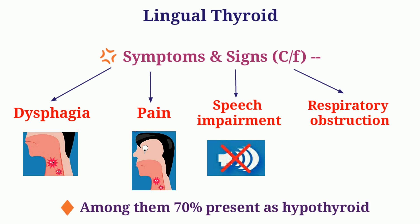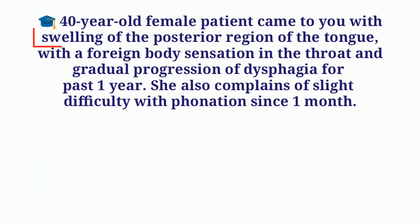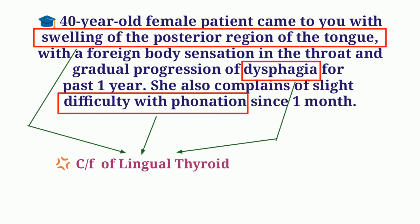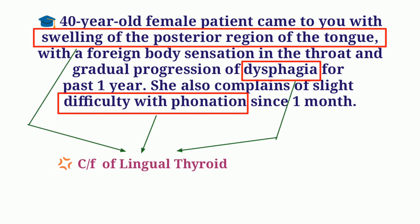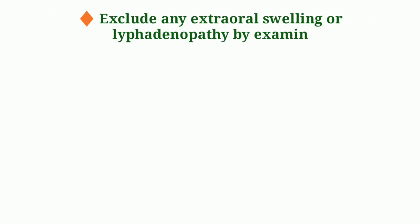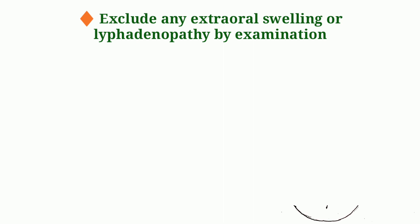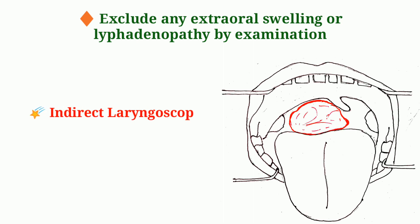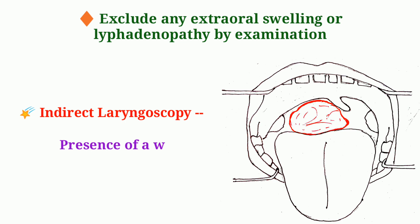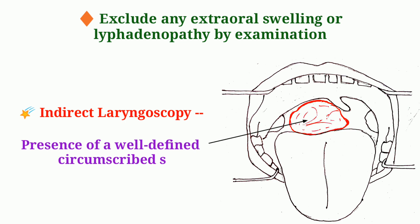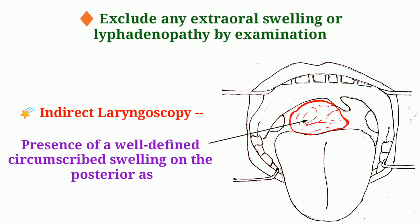70% of patients with lingual thyroid present as hypothyroid. Going back to the clinical case, by the symptoms, we can guess this is a case of lingual thyroid. On examination, we should exclude any extraoral swelling or lymphadenopathy. Indirect laryngoscopy will show a well-defined circumscribed swelling on the posterior aspect of the tongue, allowing us to clinically diagnose the case as lingual thyroid.